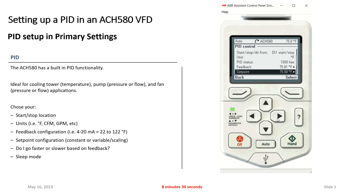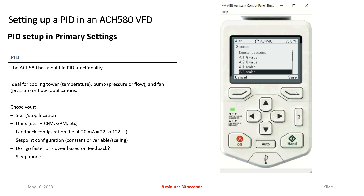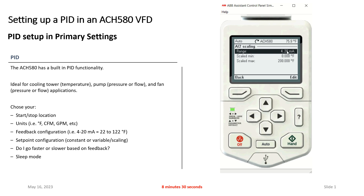Next is your set point. In that retrofit scenario of the cooling tower, a constant set point is a very common approach because there was no automation system. However, I'm going to go a little more advanced — let's say I don't want my set point to be a constant 75 degrees. Instead I want it to be variable. I do have an automation system looking at outdoor air temperature and humidity to optimize what my set point is going to be. So I change it to AI2 scaled, where my analog signal lands on analog input 2, and I can do my scaling — my 4 to 20 milliamps equals 0 to 200 degrees. Just match whatever scaling you'd want to use on the controller side so the drive knows what 4 milliamps equals and what 20 milliamps equals.